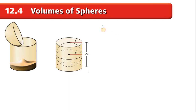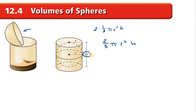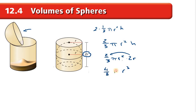So one hemisphere would be one third of π r² h, which is the same as a cone. But remember, that's just a hemisphere. We want the whole sphere, so we multiply by two, giving us two thirds π r² h. Now h is two times the radius — a sphere doesn't actually have a height, it just has a radius. So two thirds π r² times 2r. Simplifying: r² times r gives us r cubed, and two thirds times two gives us four thirds π r cubed.